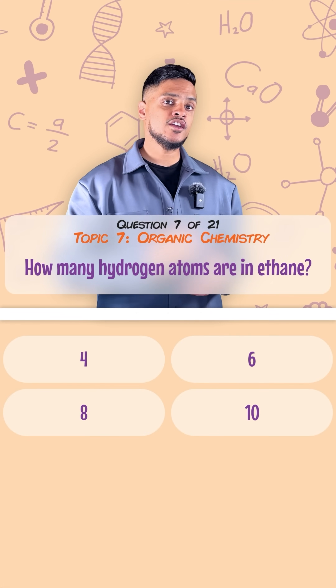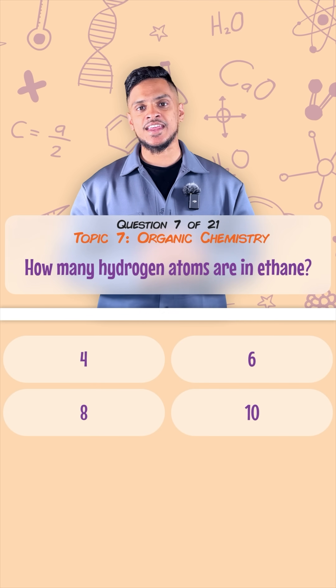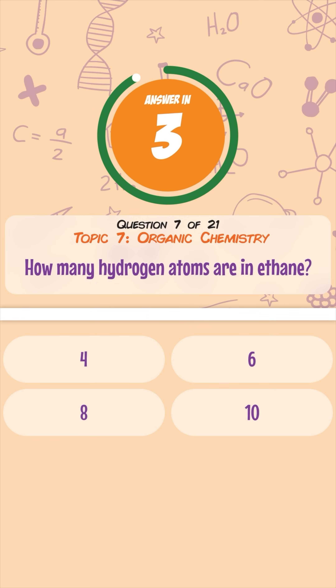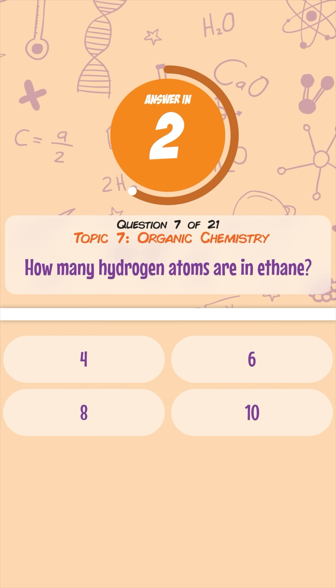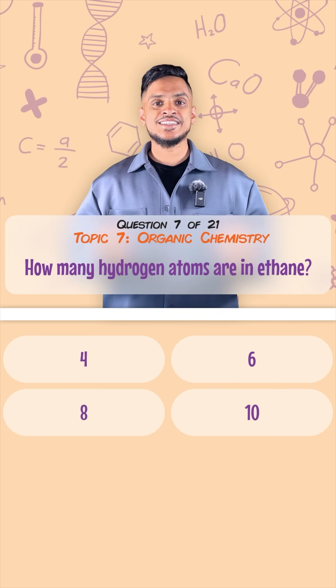How many hydrogen atoms are there in ethane? Six.